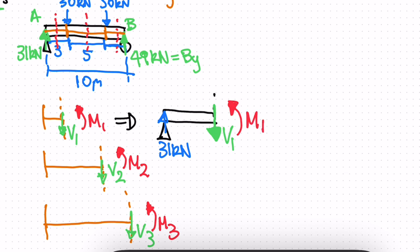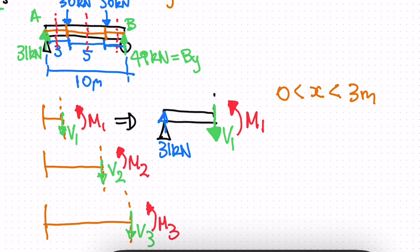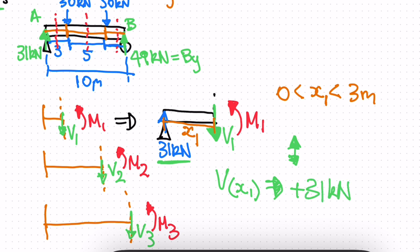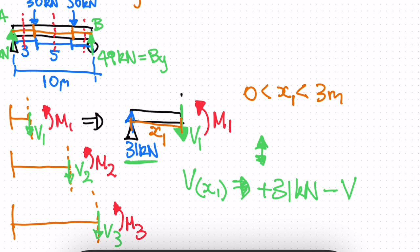If we extended the beam further, we'd reach the 30 kilonewtons force, but we've cut that section so it doesn't act yet. We're looking at any distance between zero and three meters, and we denote this distance as x1. For the shear function V(x1), looking only at vertical forces, we have positive 31 kilonewtons upward. The only other force is the shear V1 acting downward, so it's negative V1, giving 31 minus V1 = 0, therefore V1 = 31 kilonewtons.